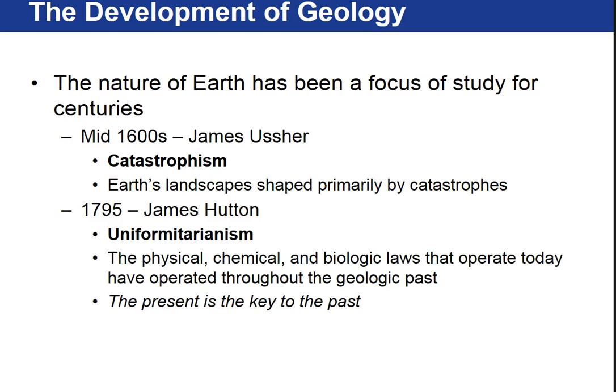Later, in 1795, James Hutton — known as the father of modern geology — developed a concept called uniformitarianism. Uniformitarianism is often stated as 'the present is the key to the past.' What that means is that processes operating at the earth's surface today and forming different landscapes are the same processes that operated in the geologic past.